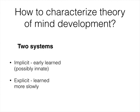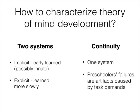Another possibility is complete continuity in children's theory of mind abilities. In this explanation, preschoolers' failures are seen as artifacts of experimental tasks that are too difficult for the child to understand. While the current evidence suggests the complete continuity account is more likely, no one study has provided conclusive evidence, and this research is ongoing.